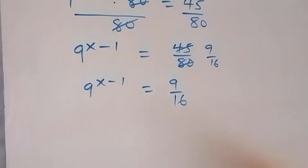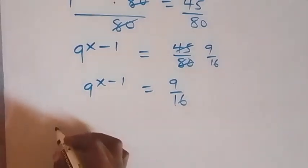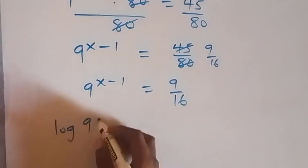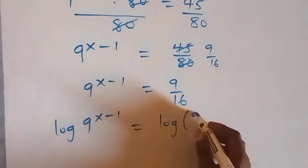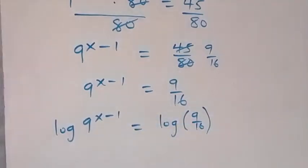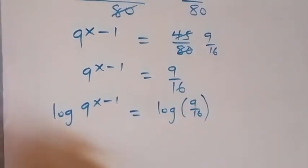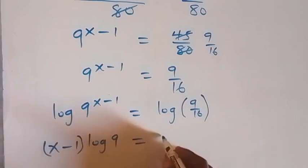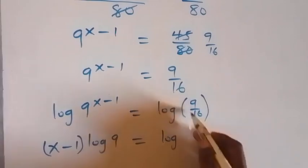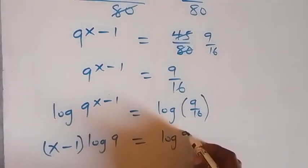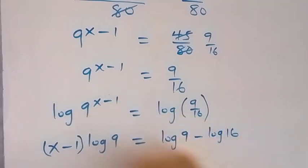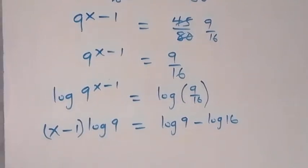And the next step, here we can take the log on both sides, and we have log 9 raised to power x minus 1. Then it goes to log 9 over 16 from here. Then from here, we apply the power law of log reading. We can take the power here to the back here. And this will become x minus 1. Then log 9, which is equal to log here. We can separate this into 2 log. And this will be log 9 minus log 16 from the law of log reading. The division returns to subtraction of 2 log.